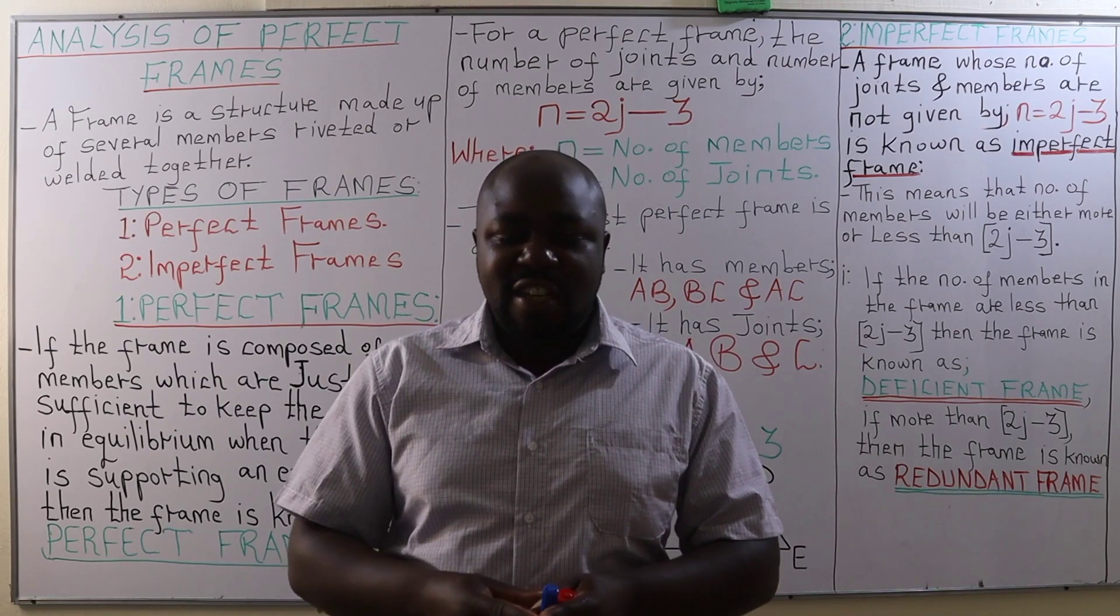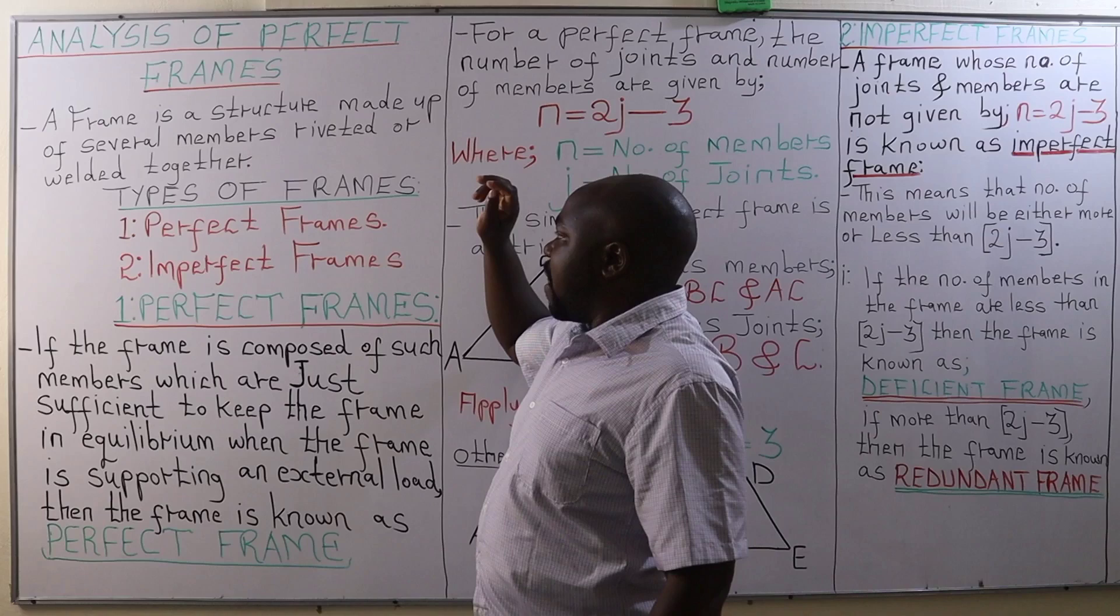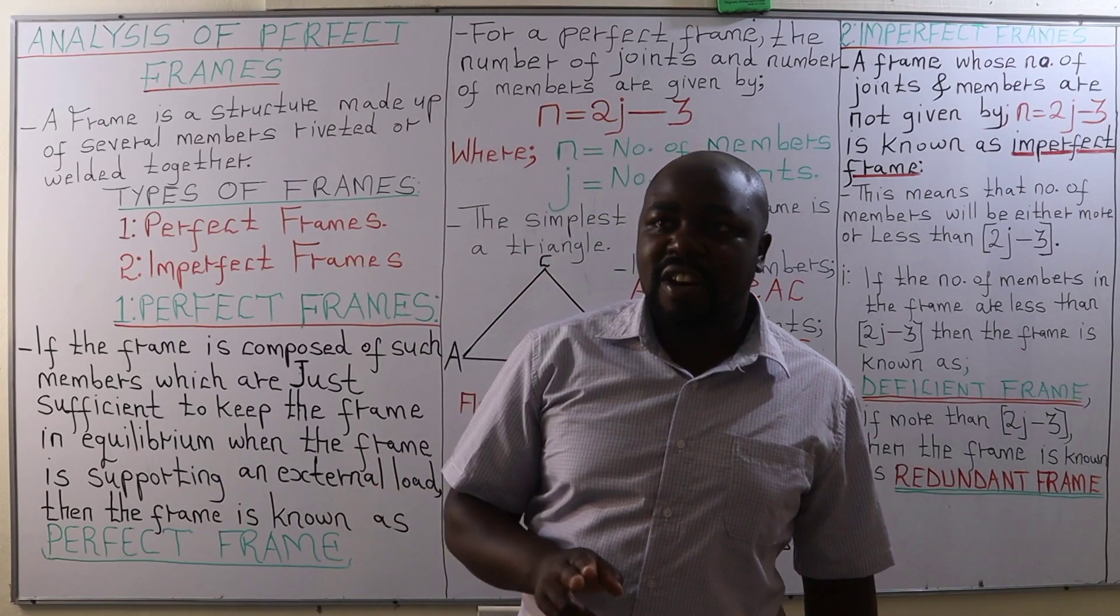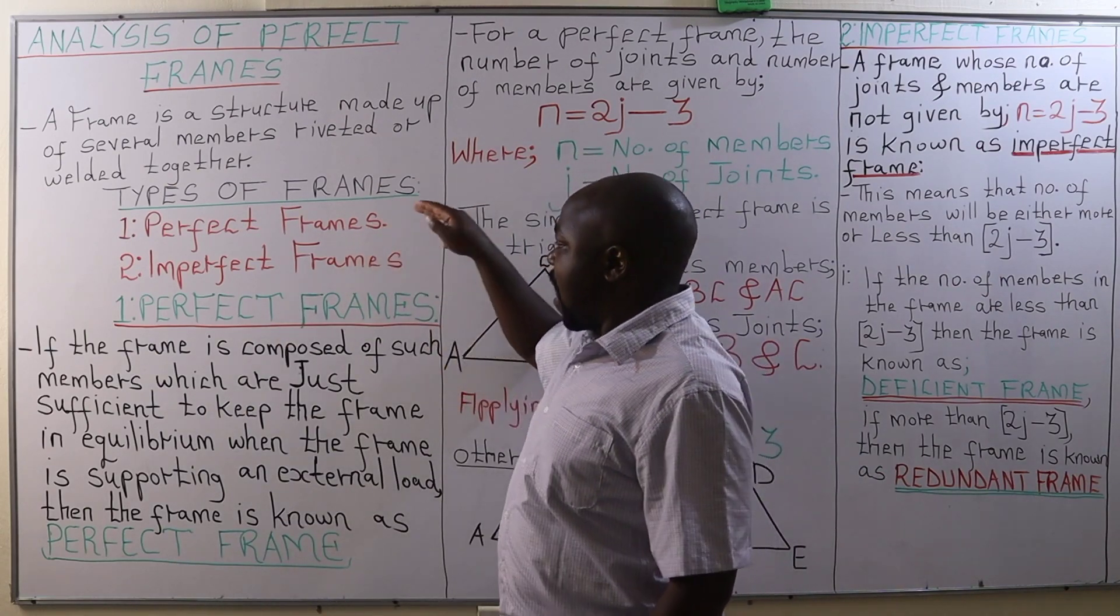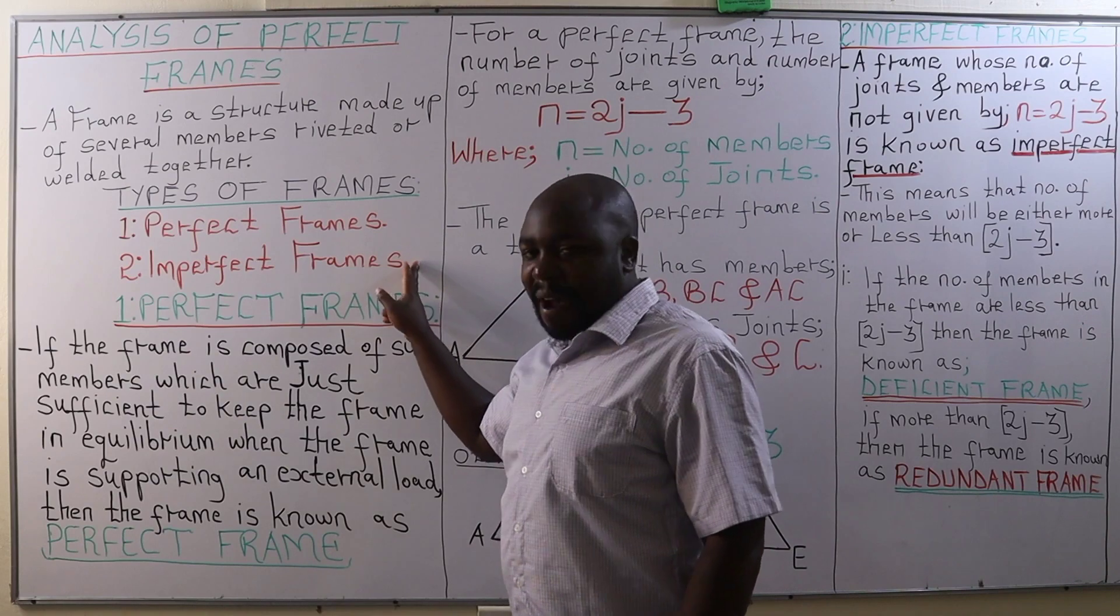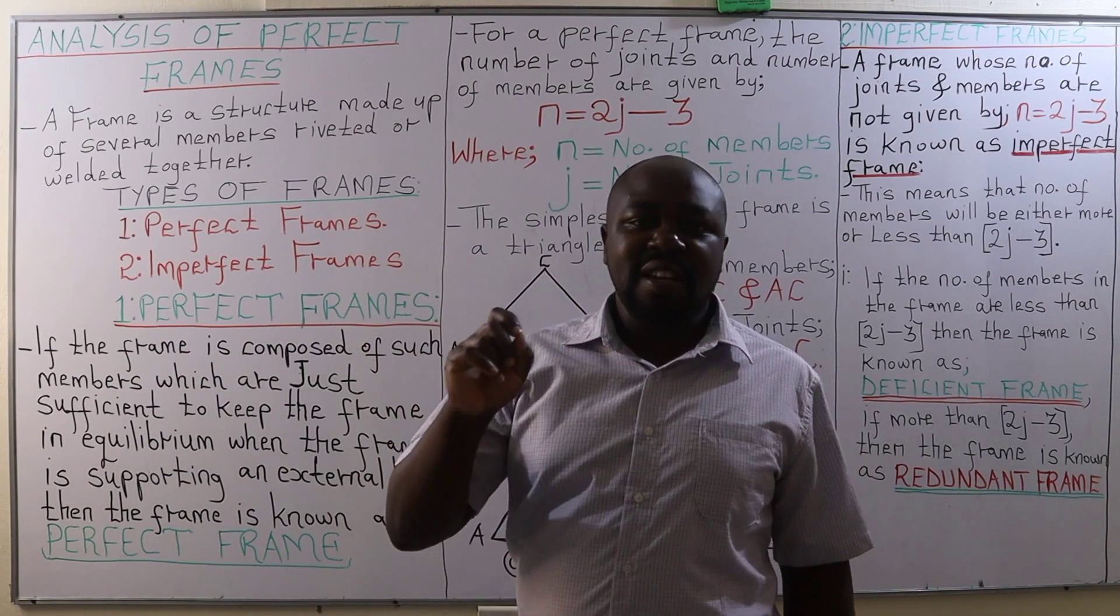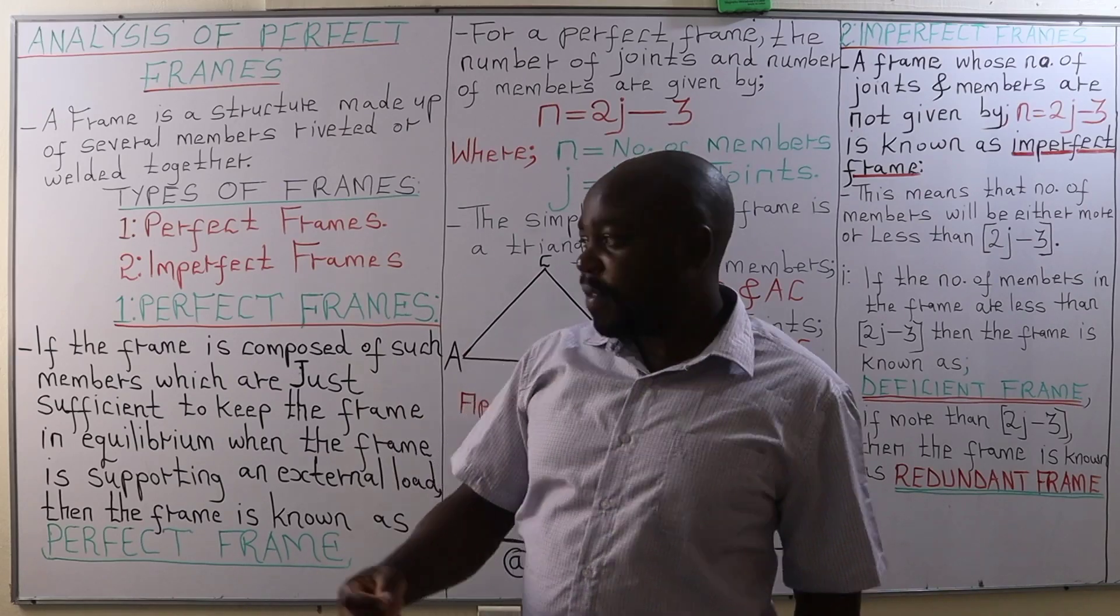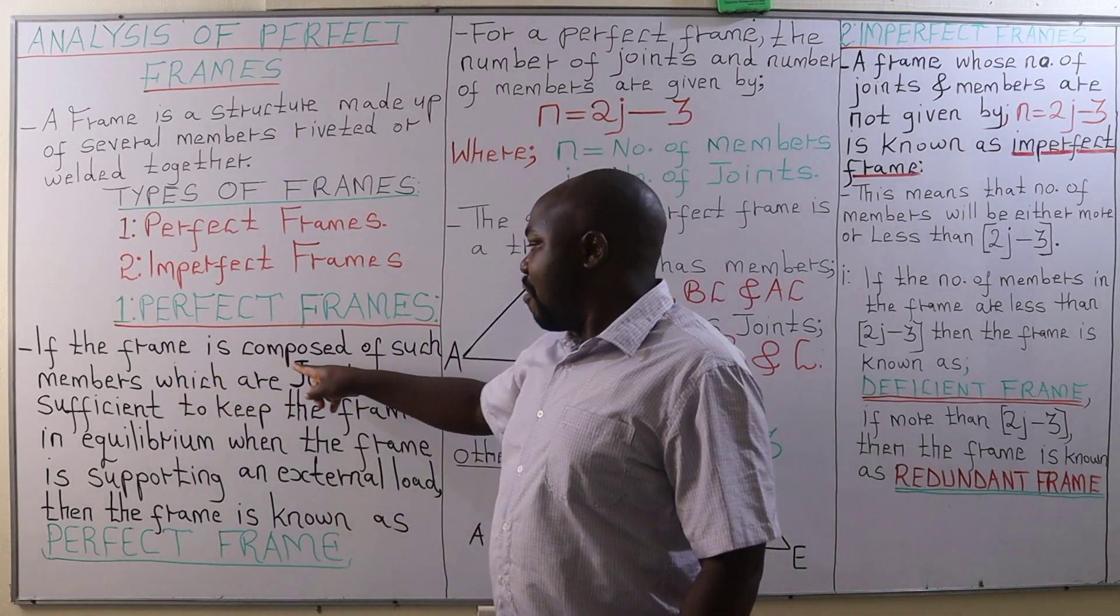Examples of frames: frames are categorized into two - we have perfect frames and we also have imperfect frames.